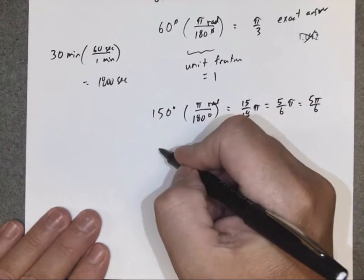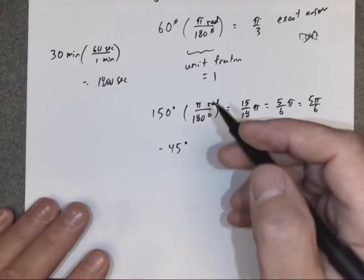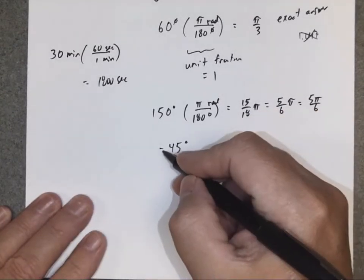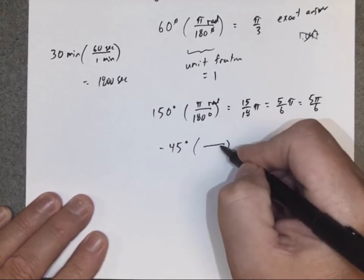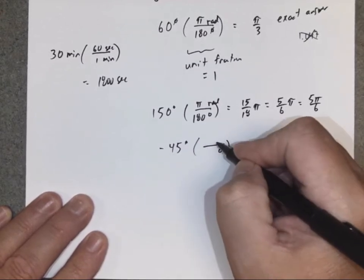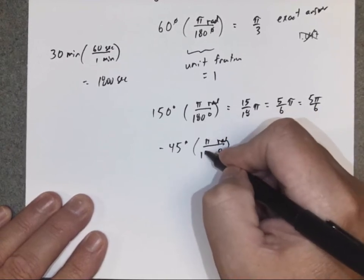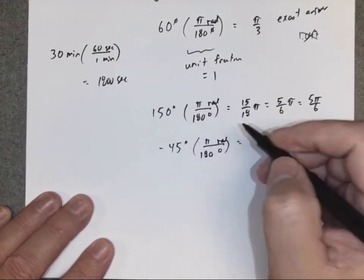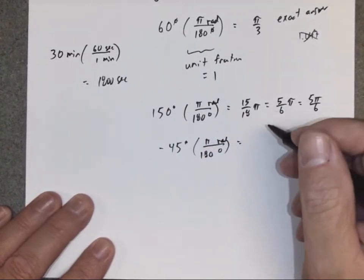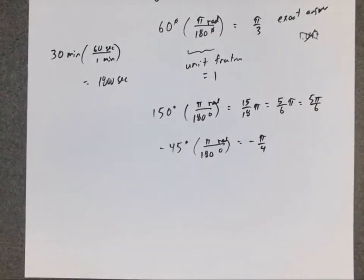Just for fun, what would negative 45 degrees be? Well, the negative just means you go in the other direction. I don't care about the negative. I'm just going to convert degrees to radians. π radians over 180 degrees. 45 over 180 turns out to be 1 fourth. This ends up being negative π over 4.